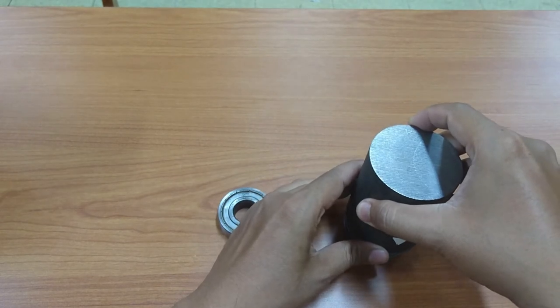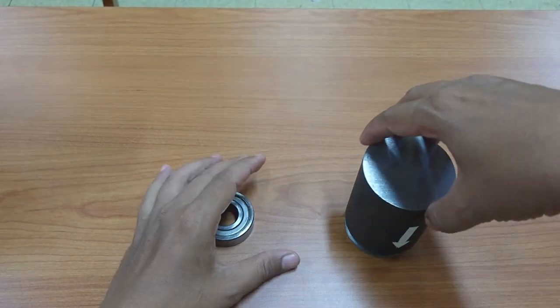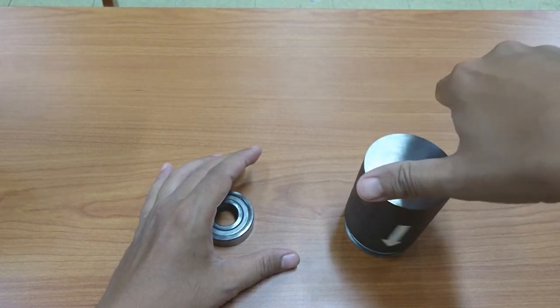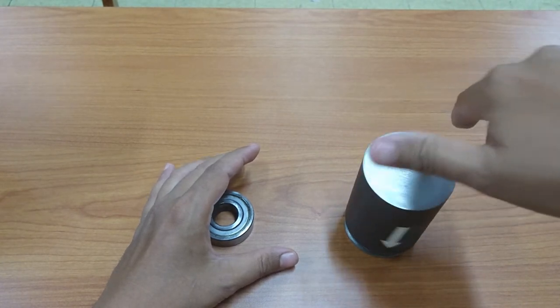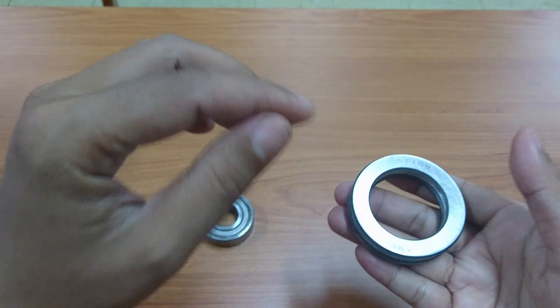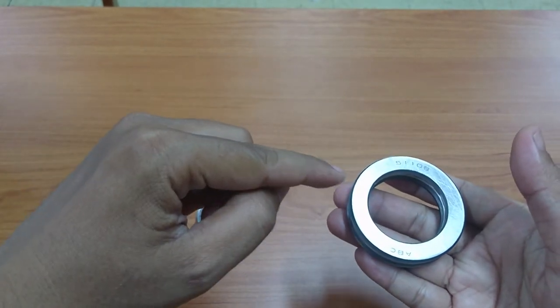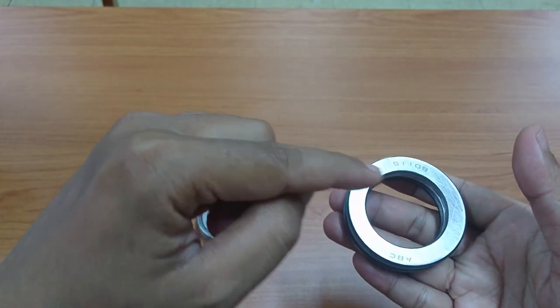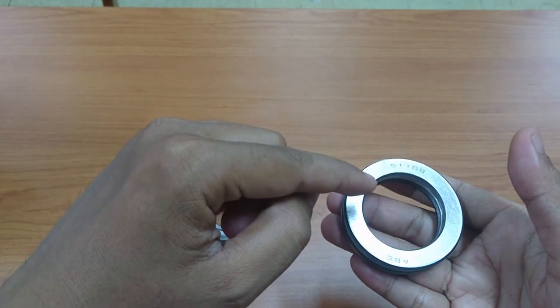I put it in here and it can turn smoothly. This bearing is a thrust bearing because it only handles thrust load, not radial load.